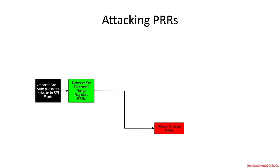The attacker can actually just go in and change the protected range registers. And the defense for that is to lock the protected range registers with the FLOCKDN bit — the flash lockdown bit.